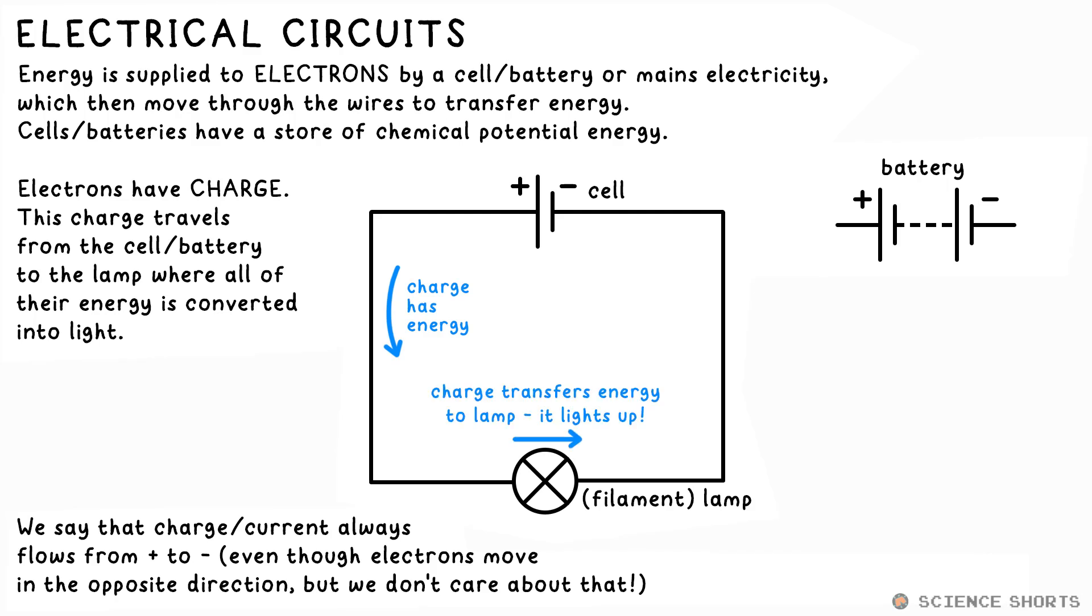As the electrons pass through the bulb, their energy is converted into light, but the electrons don't just disappear once they transfer all the energy to the bulb. As this is one big loop, these electrons are pushed back around to the battery by the ones behind them, where they're refilled with energy, ready for another trip around the circuit. This constant flow of electrons transferring energy is what keeps the light bulb on.